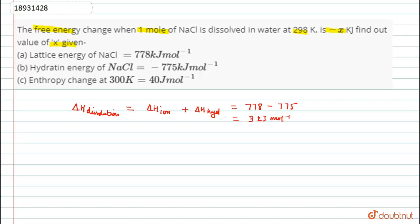Alright? So, this will be equal to 3 kJ. We can convert it into J. This will be equal to 3000. Okay? Also, delta S, entropy change of dissolution. This will be equal to 40 J mol inverse.